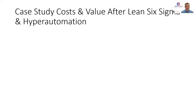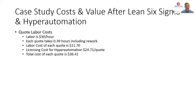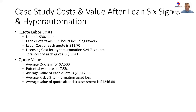Now, if we look at what their cost was after Lean Six Sigma and hyperautomation, we have some new and reduced costs. The quote labor cost is still $30 an hour, but each quote now takes 0.39 hours, including rework — down from 2.76 hours. So the cost of labor on each quote is now $11.70. They do have to pay a licensing fee for their hyperautomation, which averages to about $24.71. So the total cost they're looking at for every quote is $36.41 — a significant decrease from the $82.80 they were looking at before.